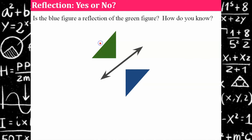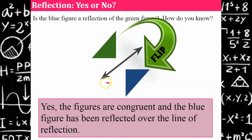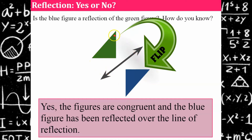Try another one: Is the blue figure a reflection of the green figure? It is indeed flipped over this line — a diagonal line, which is allowed. If we folded the paper on the line of reflection, it would line up. The right angles in each triangle are the same distance from the line of reflection, and the figures are congruent. Therefore, we conclude it is a reflection.